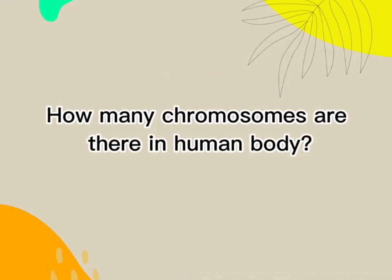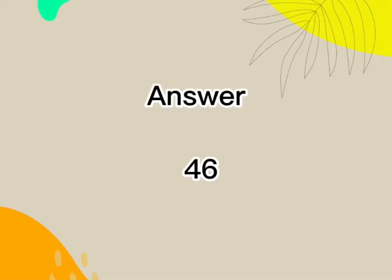How many chromosomes are there in the human body? Answer: 46.